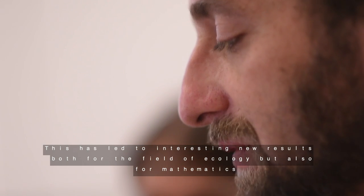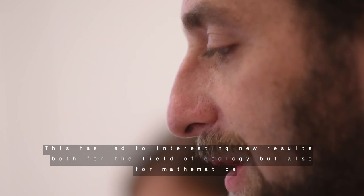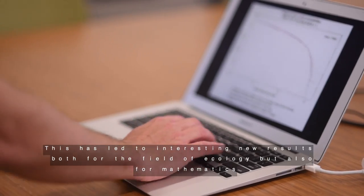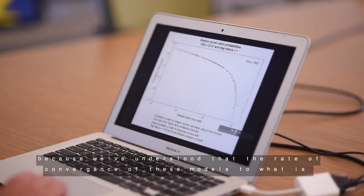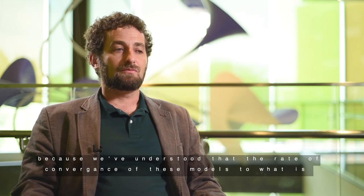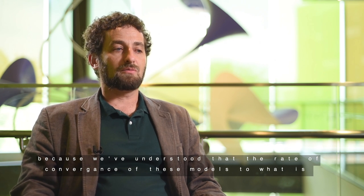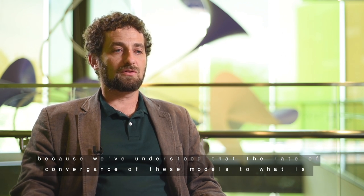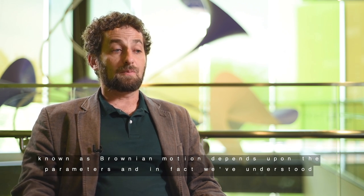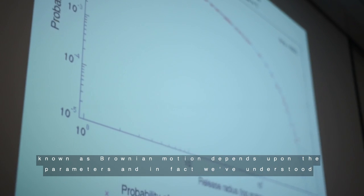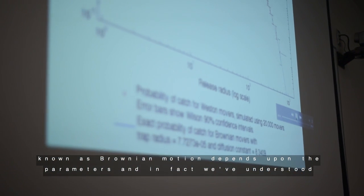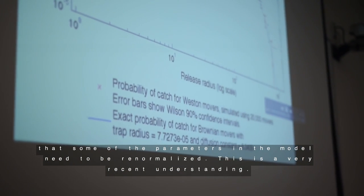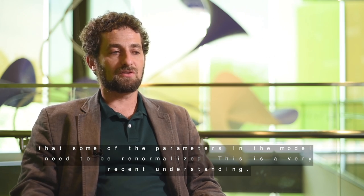This has led to interesting new results both for field ecology but also for mathematics, because we've understood that the rate of convergence of these models to what is known as Brownian motion depends upon the parameters. In fact, we've understood that some of the parameters in the model need to be renormalized. This is a very recent understanding.